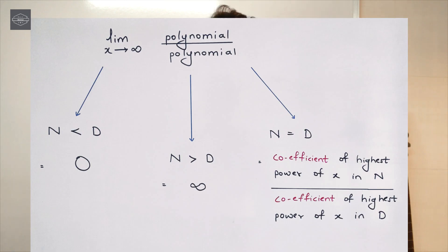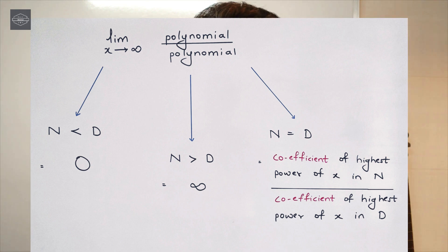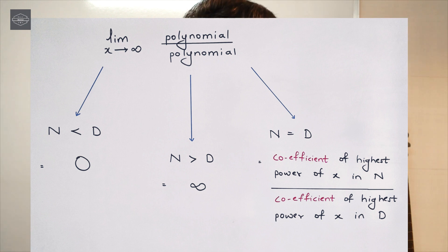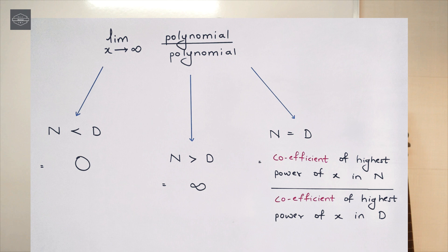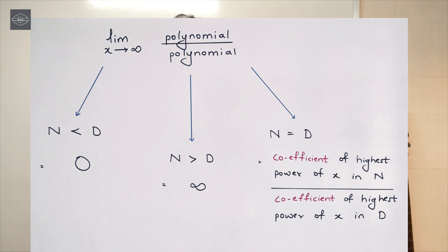The cases are: whenever we are dealing with limit x tends to infinity, if the degree of the numerator is less than the degree of the denominator, then the answer of the entire function is 0. If the degree of numerator is greater than the degree of denominator, then the answer of the entire function is infinity.